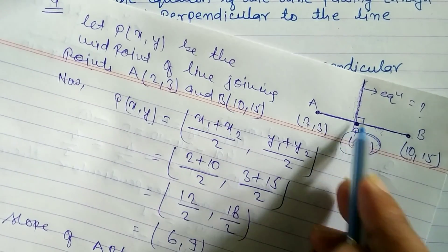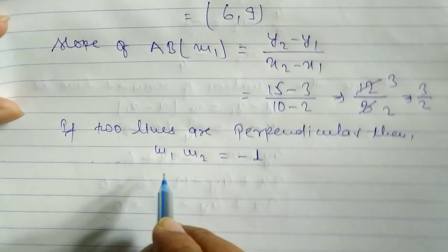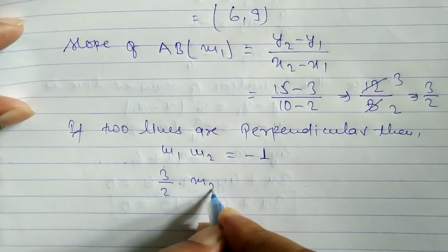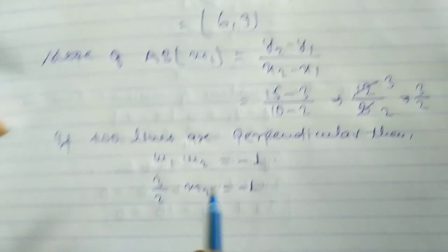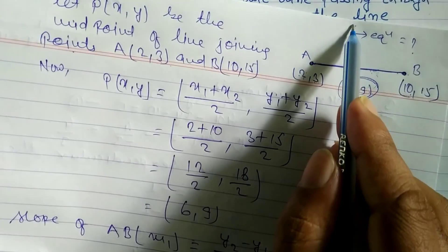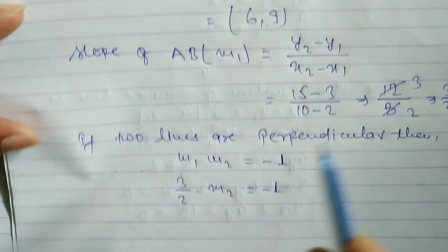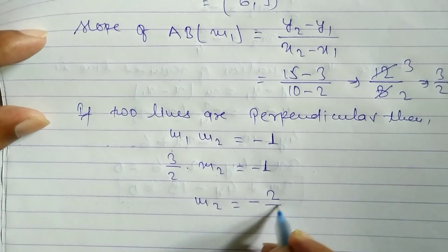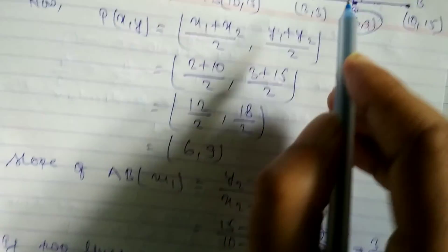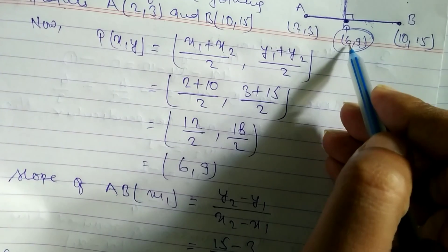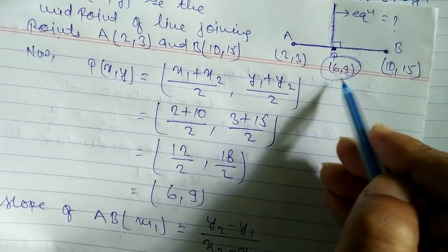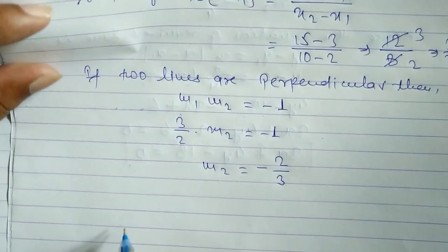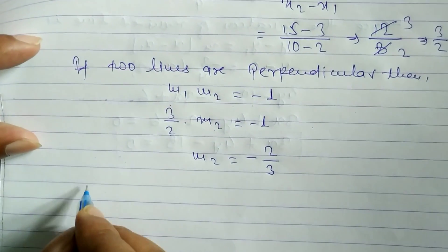Since the lines are perpendicular to each other, the product of their slopes equals minus 1. So (3/2) times m2 equals minus 1. Cross multiplying, m2 equals minus 2 by 3. This is the slope of the required perpendicular bisector. The bisector passes through (6, 9), so by the one-point formula we can find its equation.